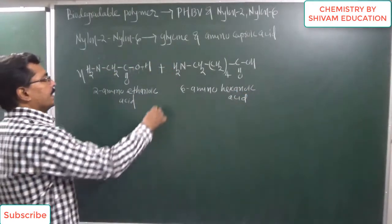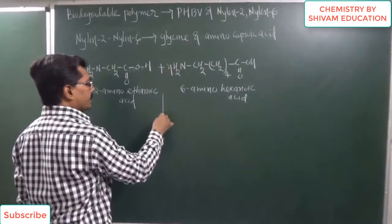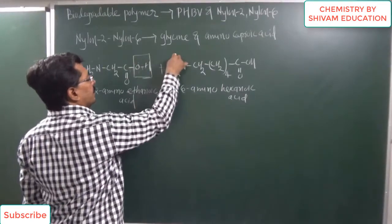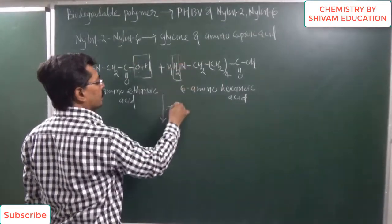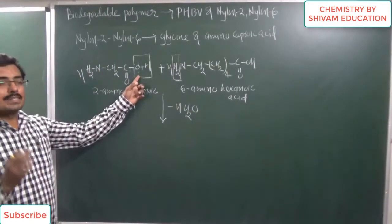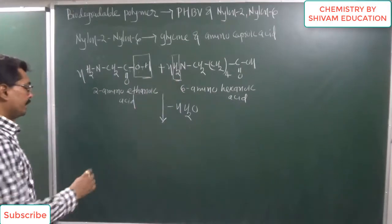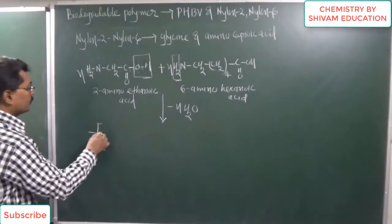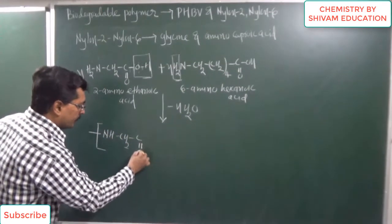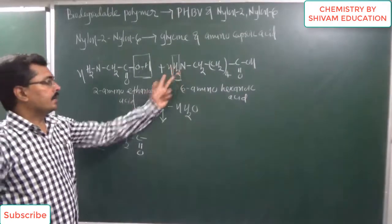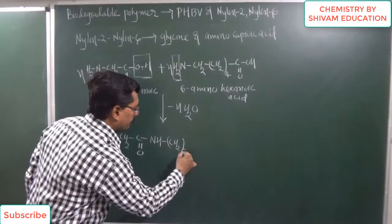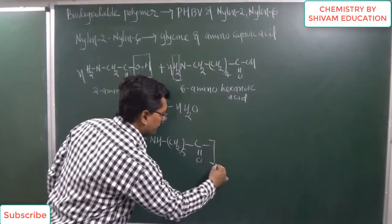A condensation reaction occurs between N moles of these two monomers. From the carboxylic acid, OH is eliminated, and from the amino group, H is eliminated, so a total of N molecules of water are eliminated. The resulting polymer structure contains NH, then CH2, then C=O, then N, repeating — followed by a CH2 methyl group segment and once again C=O, forming the polyamide backbone of Nylon 2-Nylon 6.